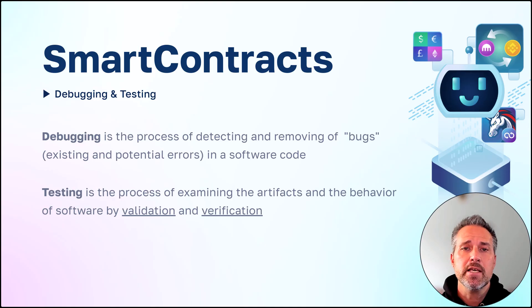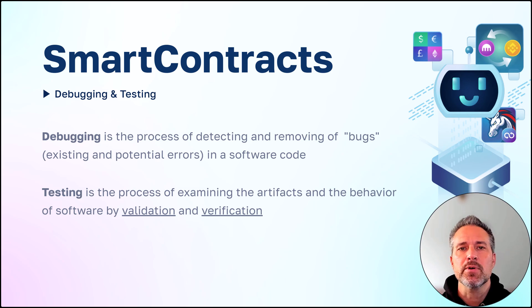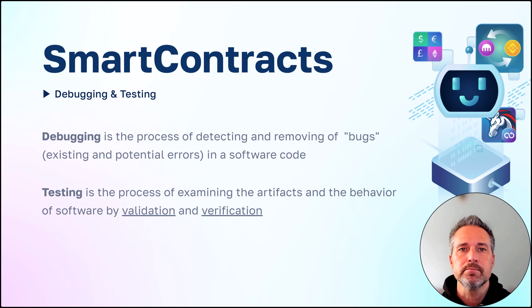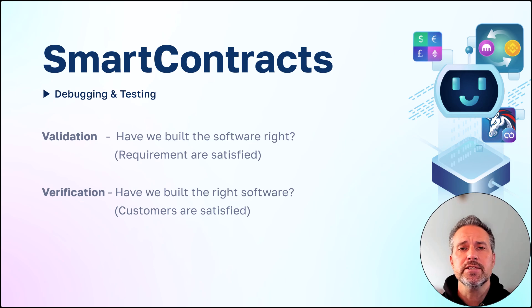Debugging is the process of detecting and removing bugs in software. Testing is the process of looking at the artifacts and the behavior of software, making sure it's doing what we want. For testing, we're talking about validation and verification.